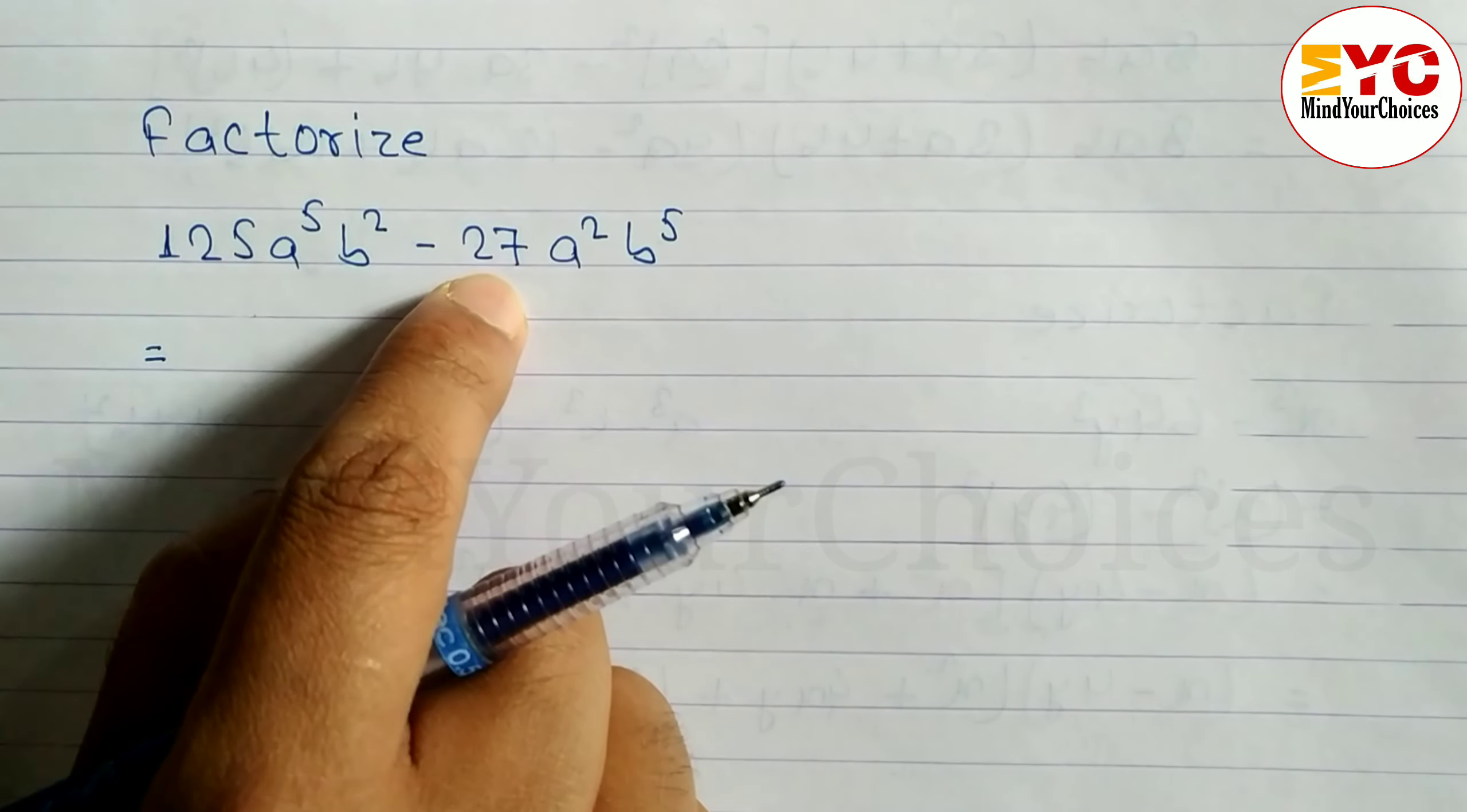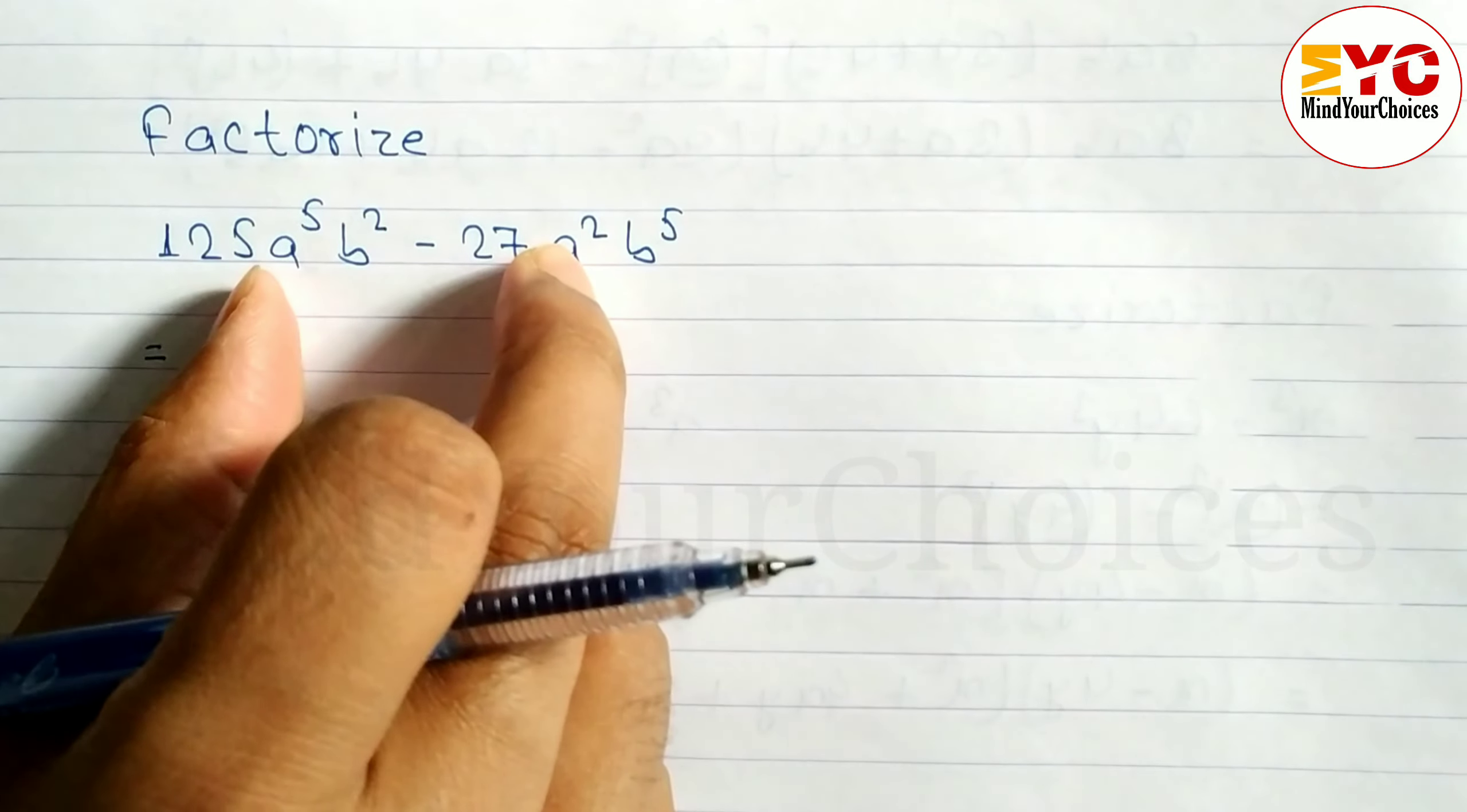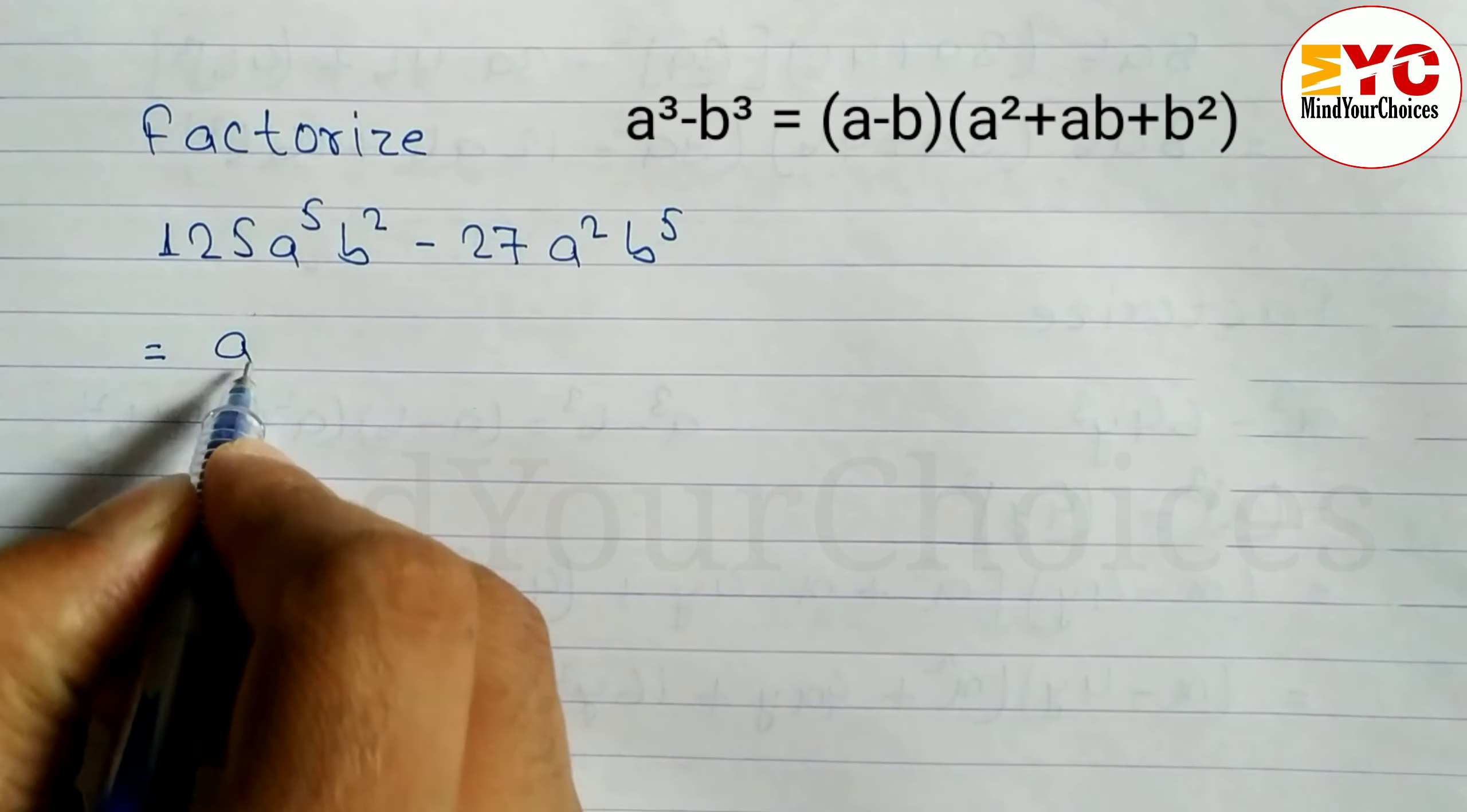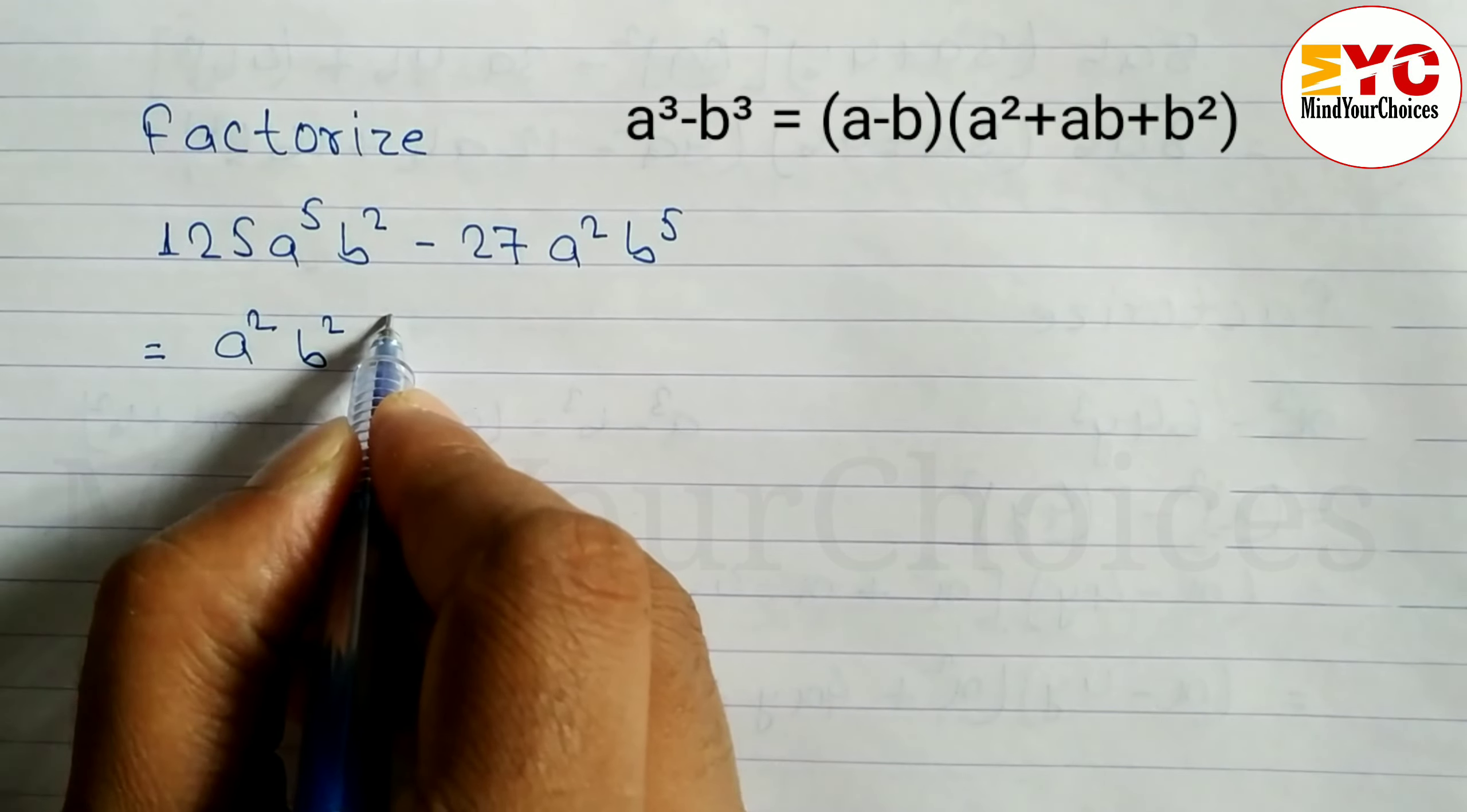Now, a⁵ and a² means the lowest power we can take is a². Here b² and b⁵, so we can take b² common. Let's see what is remaining.